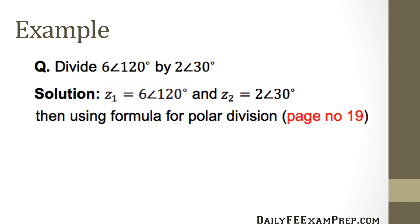Using the formula for polar division given on page 19 of the supplied reference handbook, we get z1 divided by z2 equals six over two at the angle of 120 minus 30, which equals three angle 90 degrees. So it's actually quite straightforward. That's why we want to use polar form for multiplication and division.